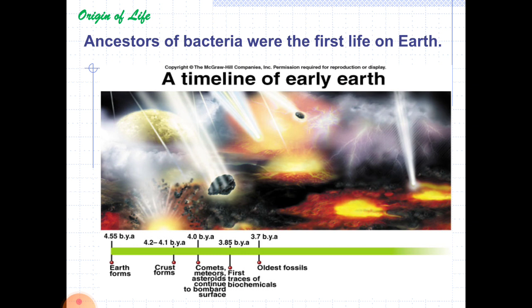The earliest direct evidence of life on earth are microfossils, and later, 3.85 billion years ago, the first traces of biochemicals were formed. According to a theory called panspermia, life on earth may have come from biological matter carried by space dust or meteoroids.